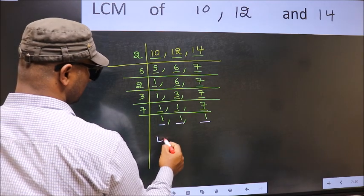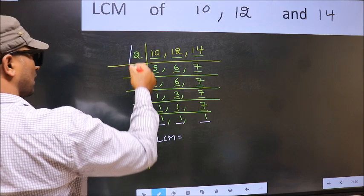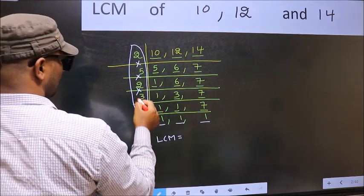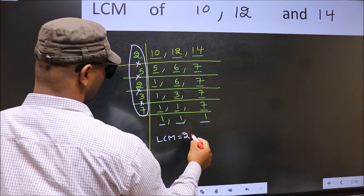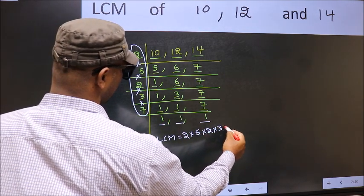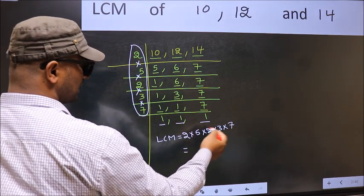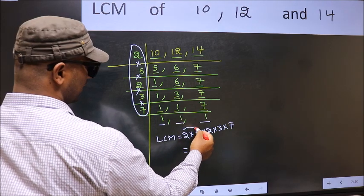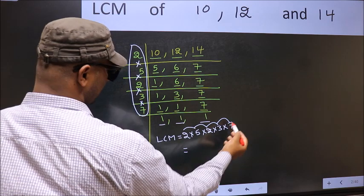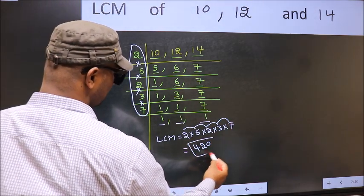So our LCM is, LCM is the product of these numbers. That is 2 into 5 into 2 into 2 into 3 into 7. Let us multiply these numbers. 2 into 5, 10 into 2, 20 into 3, 60 into 7, 420 is our LCM.